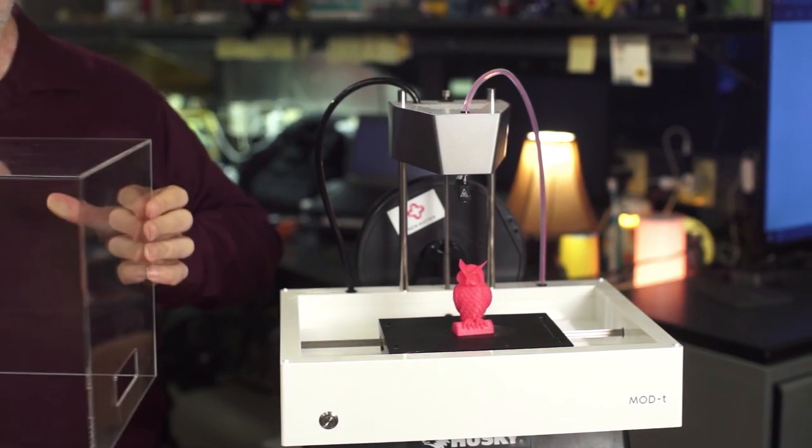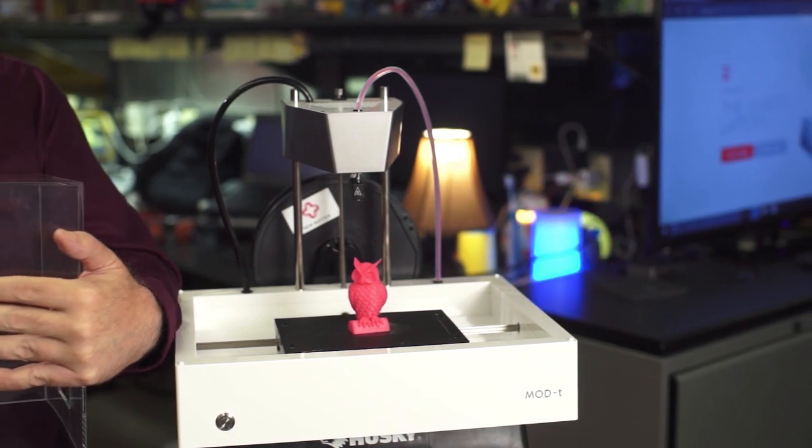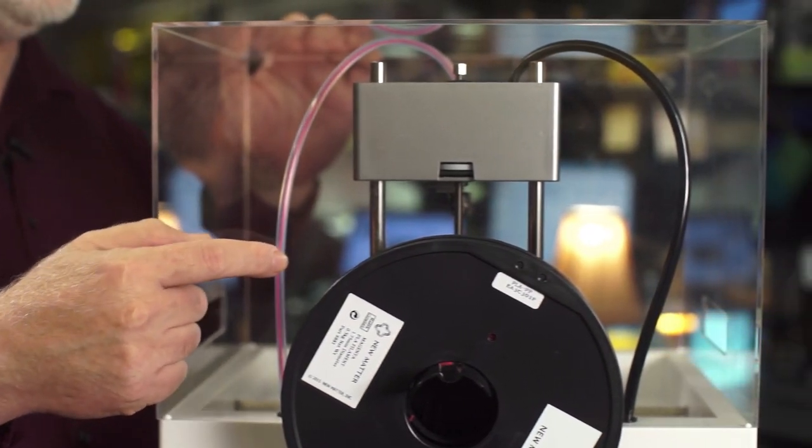You store your printable files on Numatter's website and they are sent to the Mod T when you launch a print job. The Mod T prints with PLA plastic filament, which Numatter sells at a reasonable price.